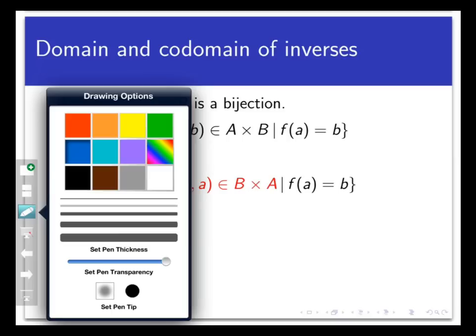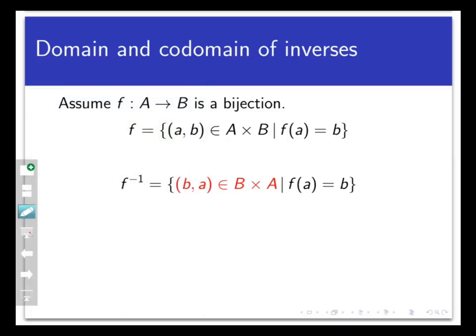We don't need to worry about whether f inverse maps each point in the domain to something, and whether f inverse splits inputs or not, because those properties are taken care of when we assume that f, the original function, is bijective. We discussed that in the last video. So what are the domain and codomain of f inverse?